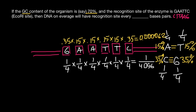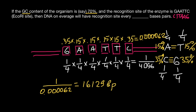So what does this number mean? If we take any random six-base-pair site, the probability that it matches the EcoRI sequence is 0.0000062. One divided by 0.0000062 gives us approximately 16,129 base pairs. So we find one recognition site every 16,129 base pairs when GC content is 70%, compared to every 4096 base pairs when GC content is 50%.